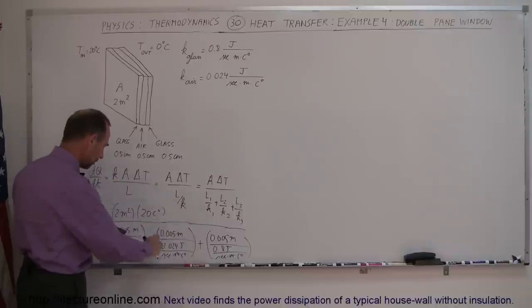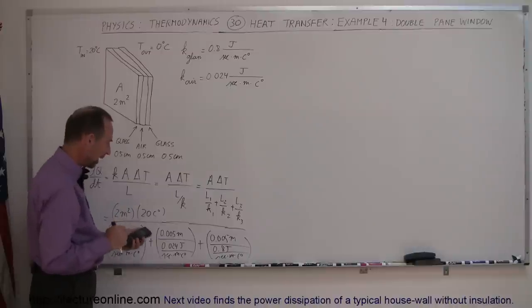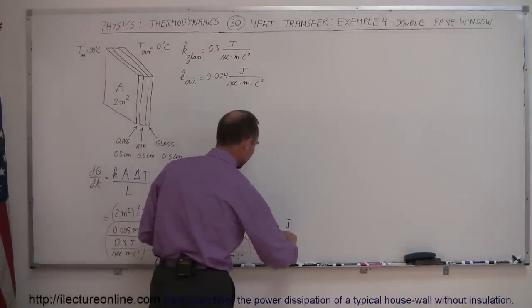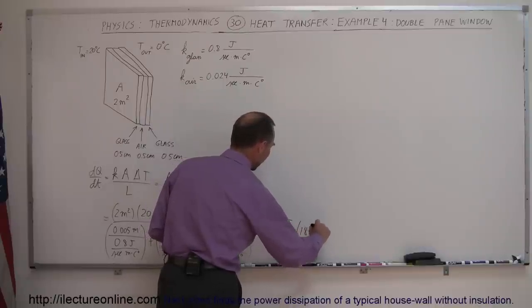That's the total sum of the denominator. We push 1 over x on the calculator, then multiply that times 2 and multiply that times 20, and we get 181 joules per second, which is equal to 181 watts.